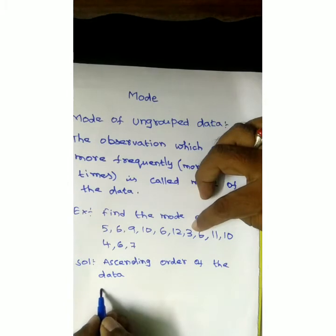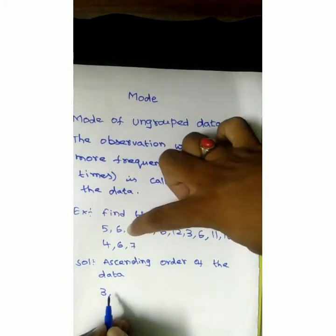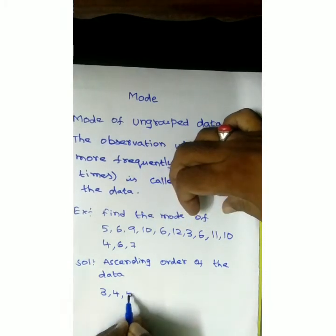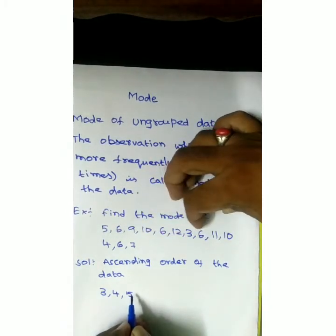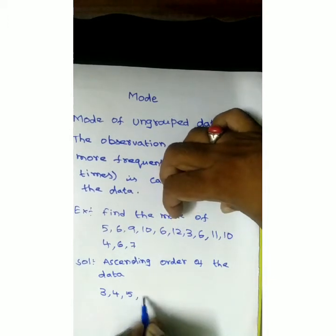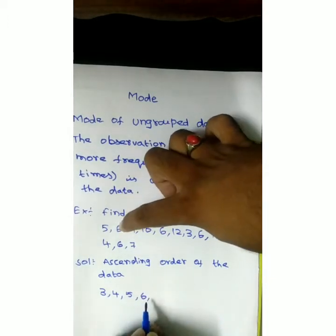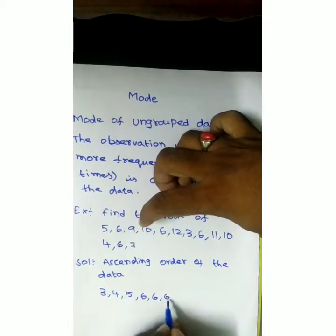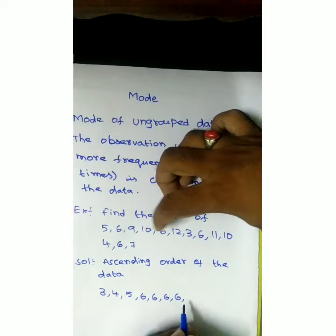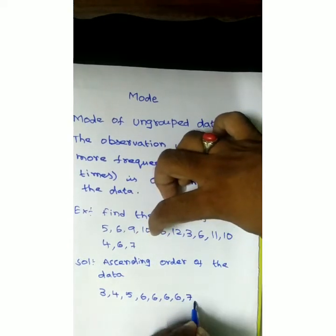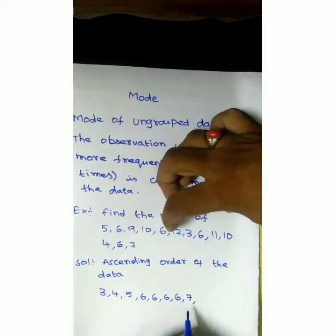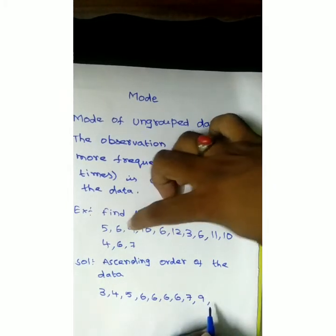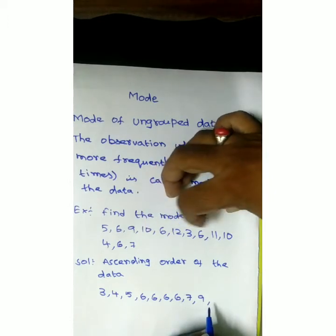The least value is 3, then 4, then 5 — which comes 1 time only. Next, 6 appears 1, 2, 3, 4 times. Then 7 is there. Next, 9 comes 1 time. 10 comes 2 times.